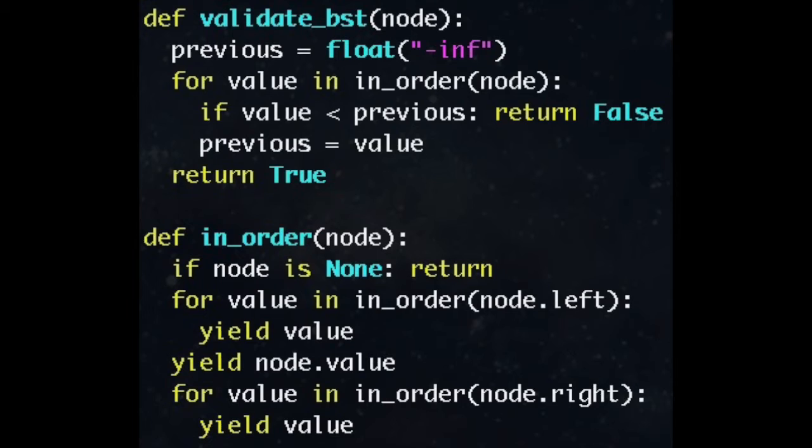The code looks like this. In the validation method, we go through each value and make sure it's greater than the previous value, and if not, we return false. We discuss traversals more in our tree reconstruction video linked here.